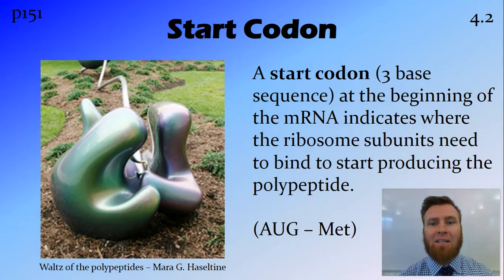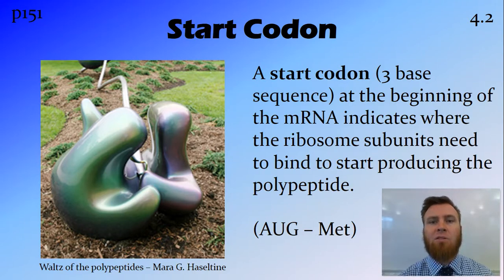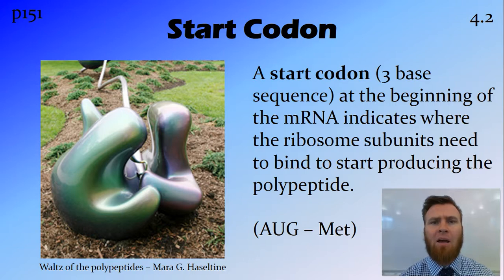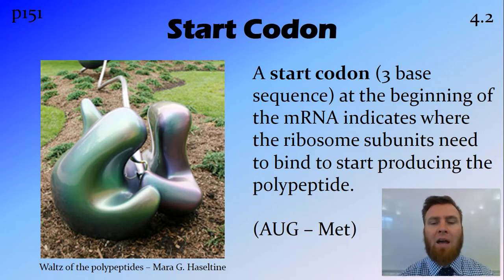We're going to talk about the start codon, but before we talk about the start codon, let's talk about codons in general. A codon is a sequence of three base pairs that codes for a particular amino acid. The start codon is a three base pair sequence that is at the beginning of the mRNA, and it tells the ribosomes where to bind onto the strand of mRNA — where to bind so that it's at the start rather than at the end or in the middle of the mRNA.